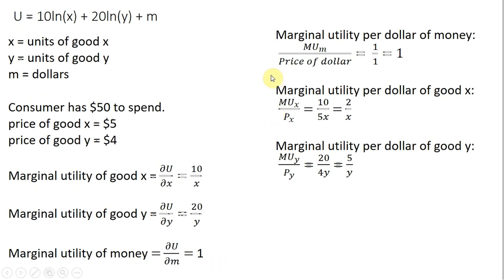The next thing we're going to do is calculate what you might call bang for the buck, marginal utility per dollar. We'll start with the marginal utility per dollar of money. We take the marginal utility of money and divide it by the price of a dollar. So 1 divided by 1 is 1. Again, where the marginal utility of money is what we already solved here, we found it to equal 1, and then we divide it by the price of a dollar, which is just $1. We get 1.